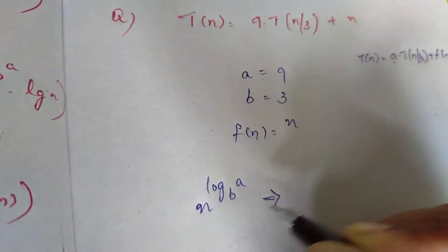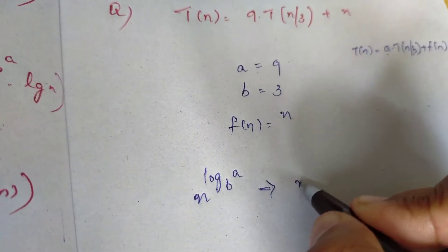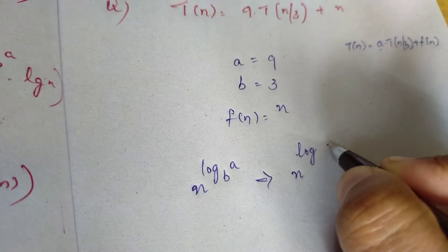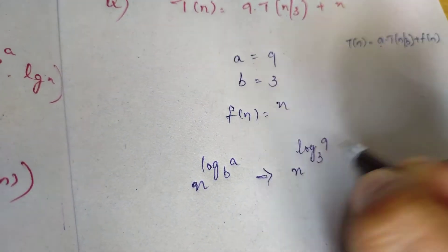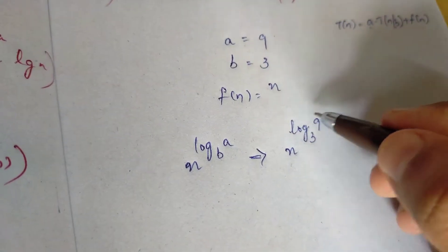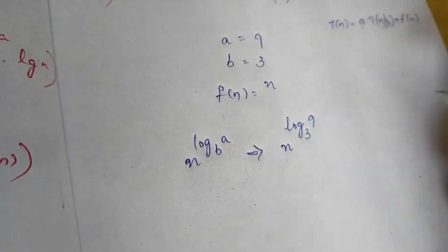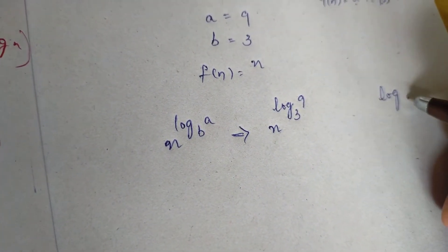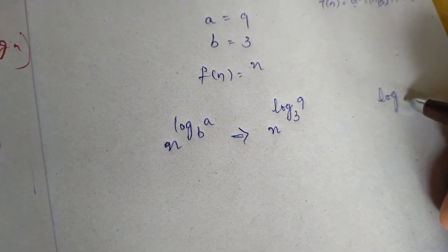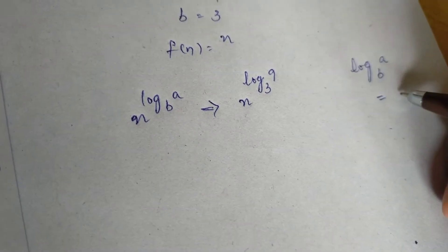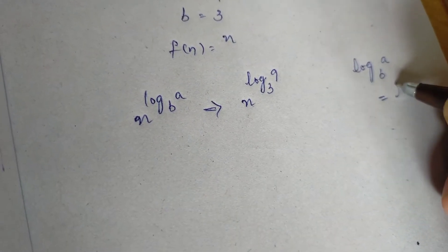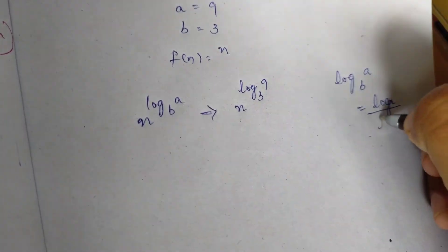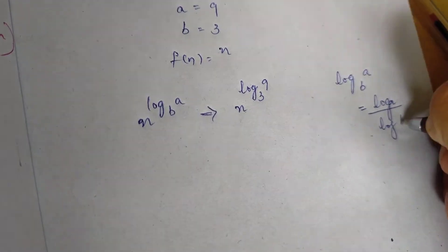We compare n to n^(log a base b). That is, n^(log 9 base 3). We compute log A by log B — that is log 9 divided by log 3.